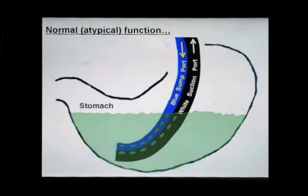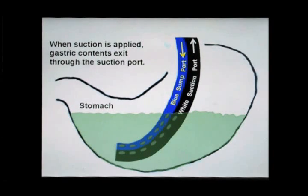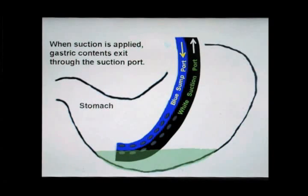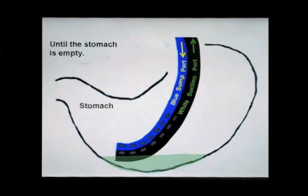During normal function, which is unfortunately atypical, suction applied to the suction tube allows for gastric contents to be aspirated or suctioned from the stomach until the stomach is empty.